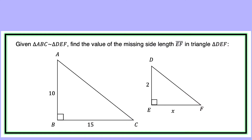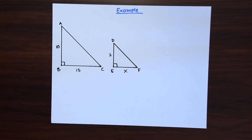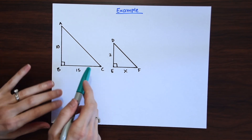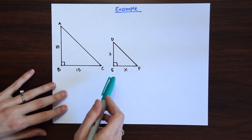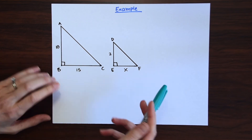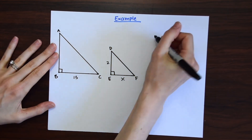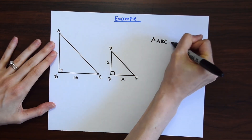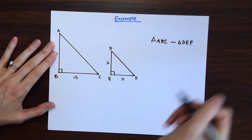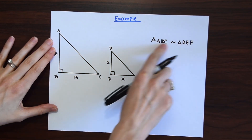Let's look at how to apply these triangle similarity rules with an example. Given that triangle ABC is similar to triangle DEF, find the value of the missing side length in triangle DEF, marked with X. As a side note, we can see this is a side-angle-side situation because we have two sides and they both share this 90-degree angle. To find X, because the triangles are similar, their side lengths must be in proportion.